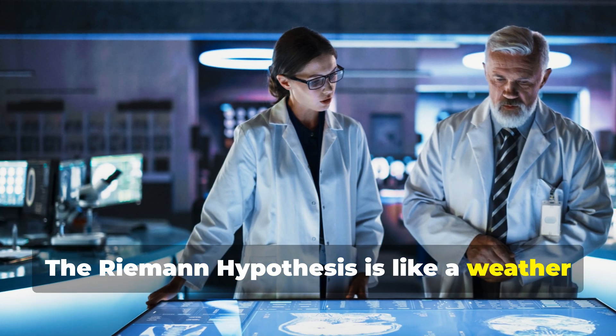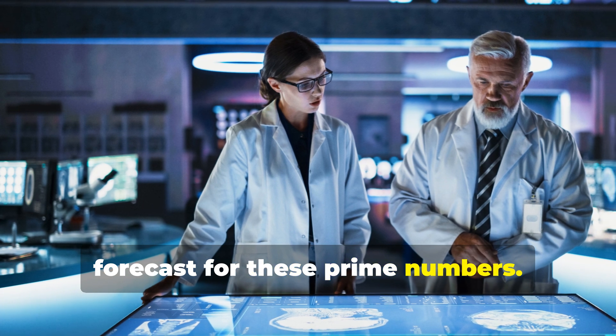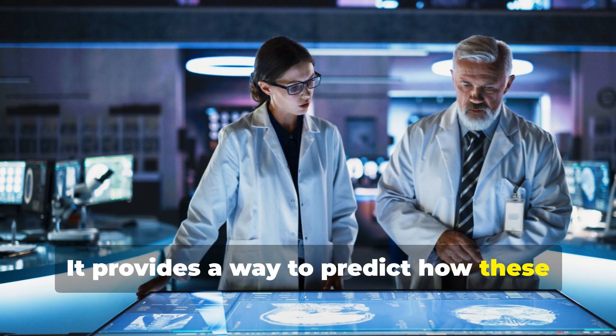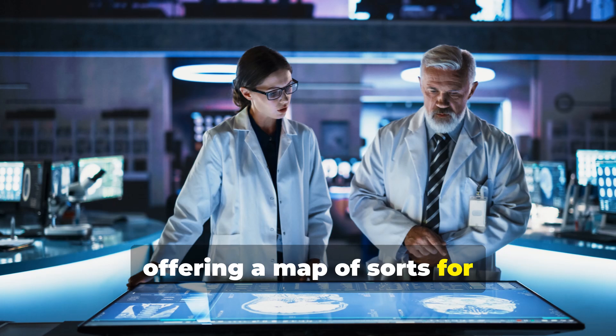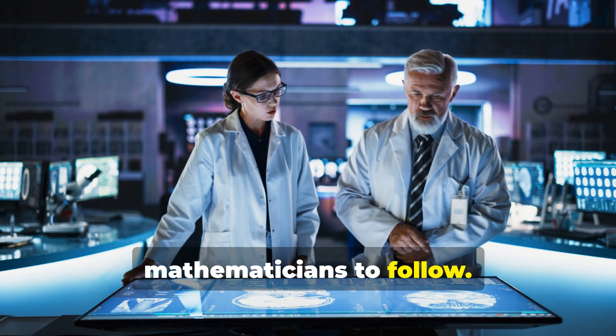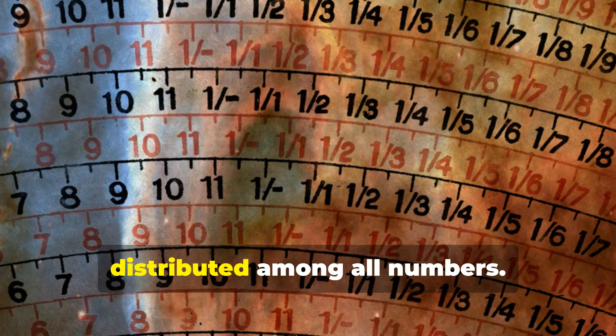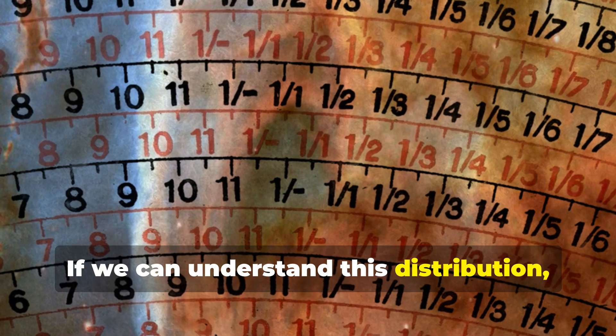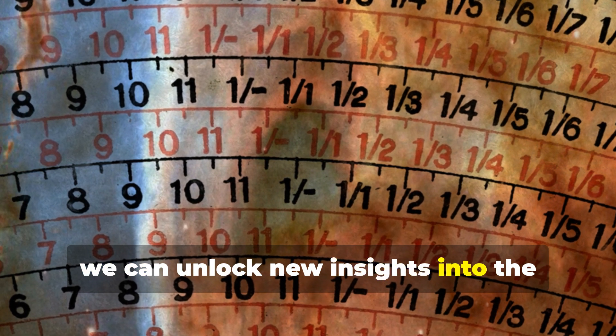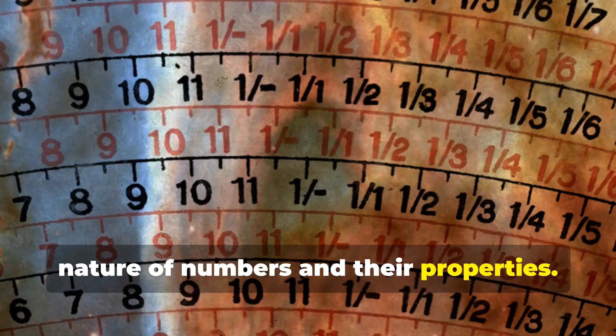The Riemann Hypothesis is like a weather forecast for these prime numbers. It provides a way to predict how these primes are distributed among all numbers, offering a map of sorts for mathematicians to follow. If we can understand this distribution, we can unlock new insights into the nature of numbers and their properties.